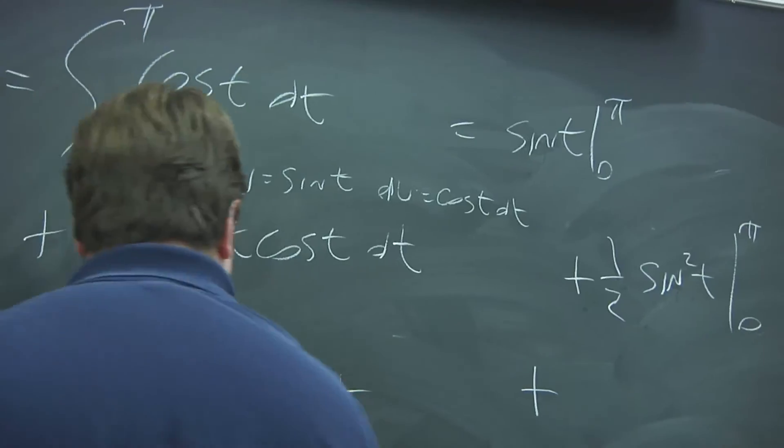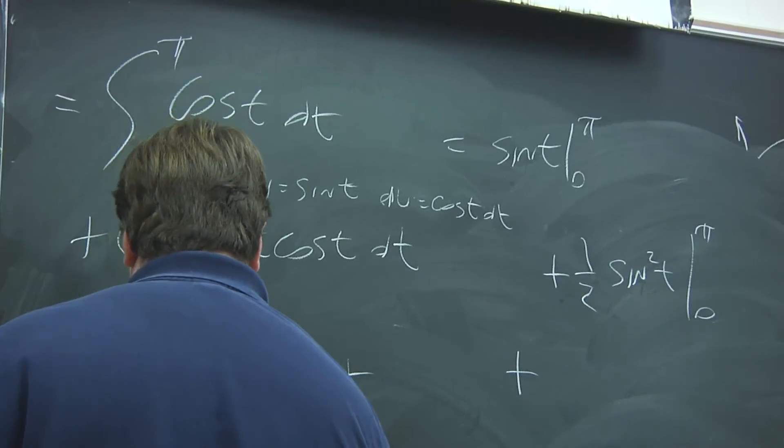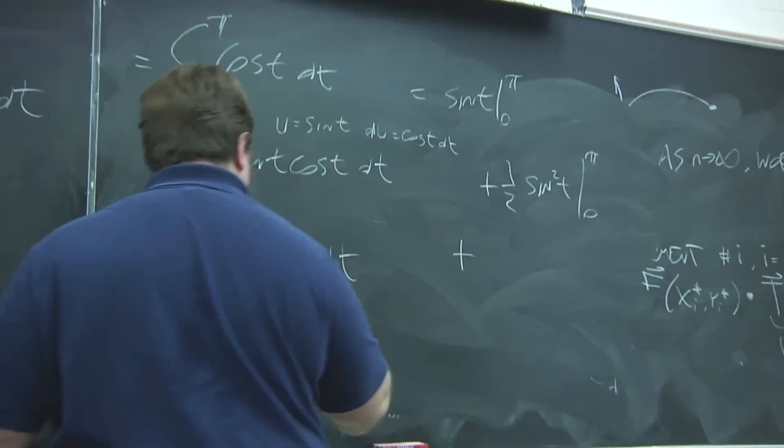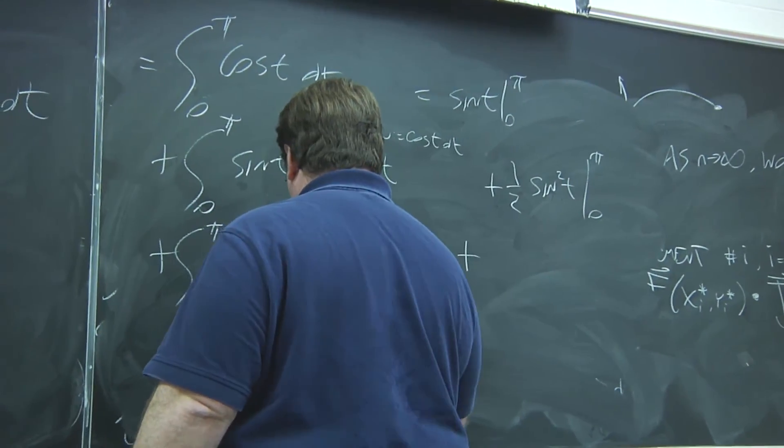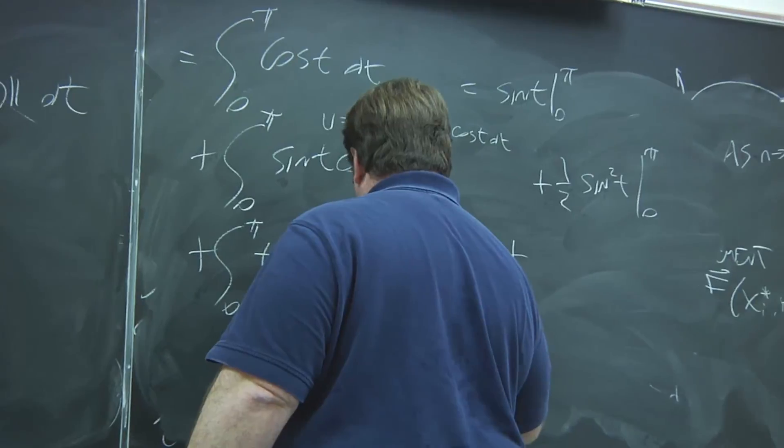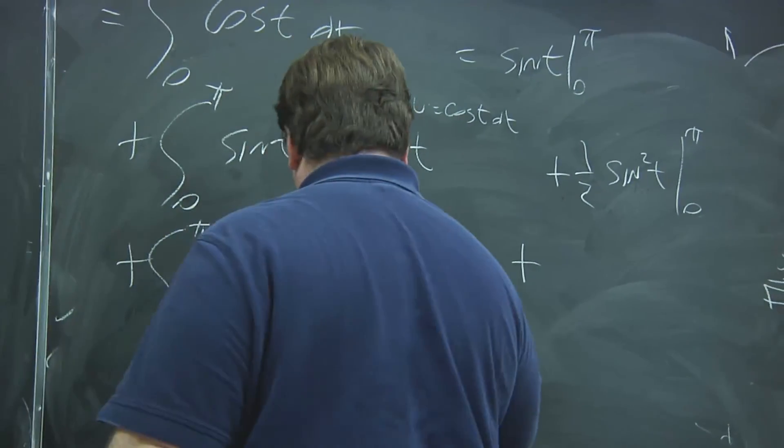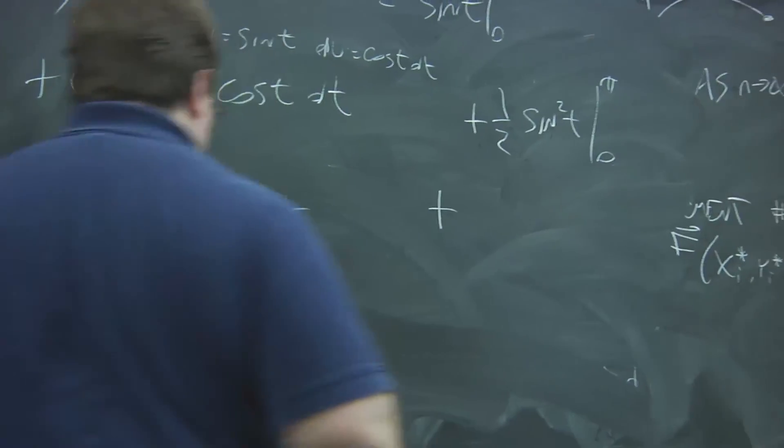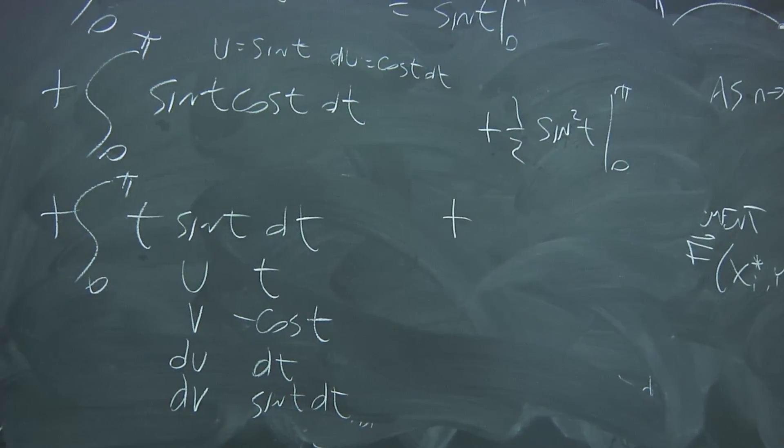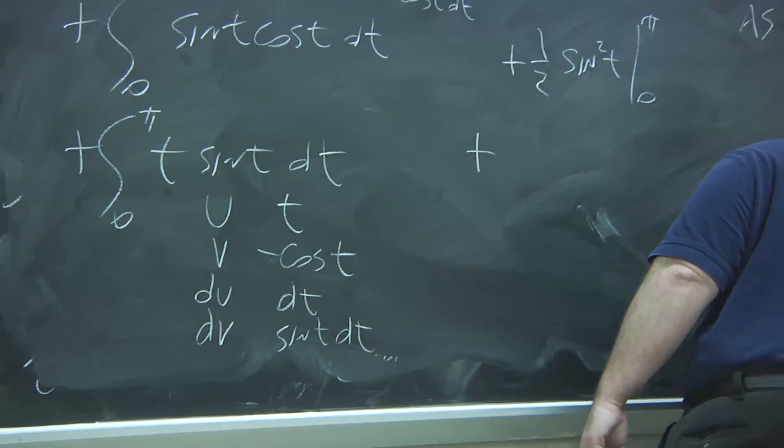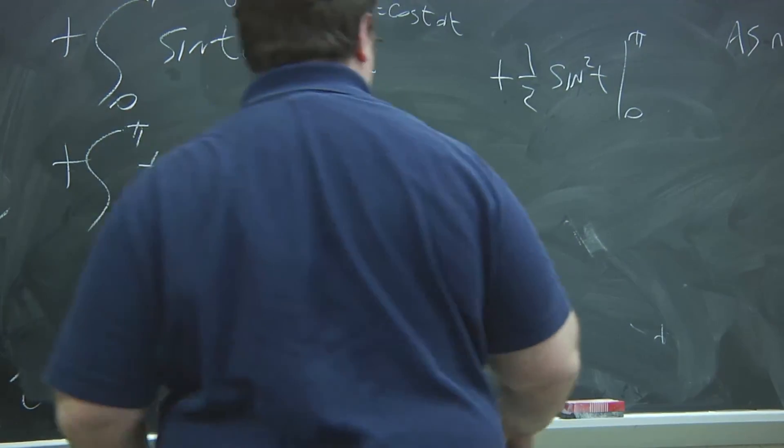And now for this. Integration by parts. u, v, du, dv. So, pick u to be T, du is dT, dv is sine T dT, and then v is minus cosine T. So, what you're going to get is u times v.